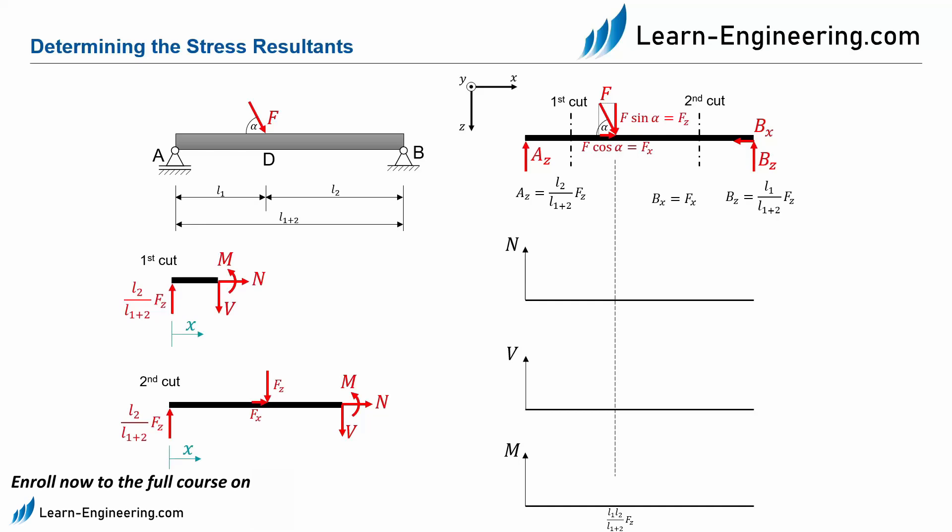With the first section at the normal force, we can then form the sum of all forces in the X direction. Since we only have the stress resultant N in the first section, we have N equal to zero, so we cannot enter anything but N equal to zero in the normal force diagram.